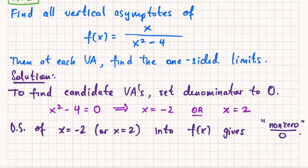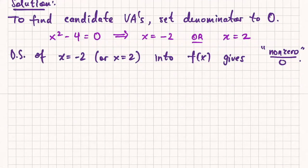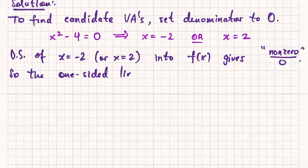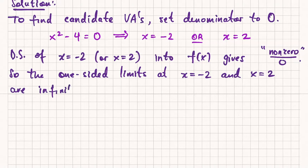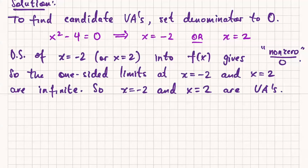So all these one-sided limits are infinite — the left and right limit at negative two, and the left and right limit at two. We have two vertical asymptotes. Note that vertical asymptotes are lines, so you should identify them by equations. The equation of a vertical line is always of the form x equals something. Set the denominator equal to zero and get your vertical asymptotes.